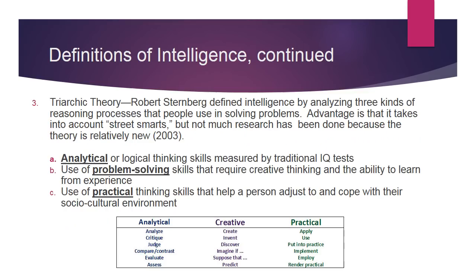Howard Gardner gives us the ability to be a genius in one way but not a great intellect in other ways, and still feel really good about our abilities. Then we have the triarchic theory by Robert Sternberg, which defined intelligence by analyzing three kinds of reasoning processes that people use in solving problems. The advantage is that it takes into account street smarts, but not much research has been done because the theory is relatively new.